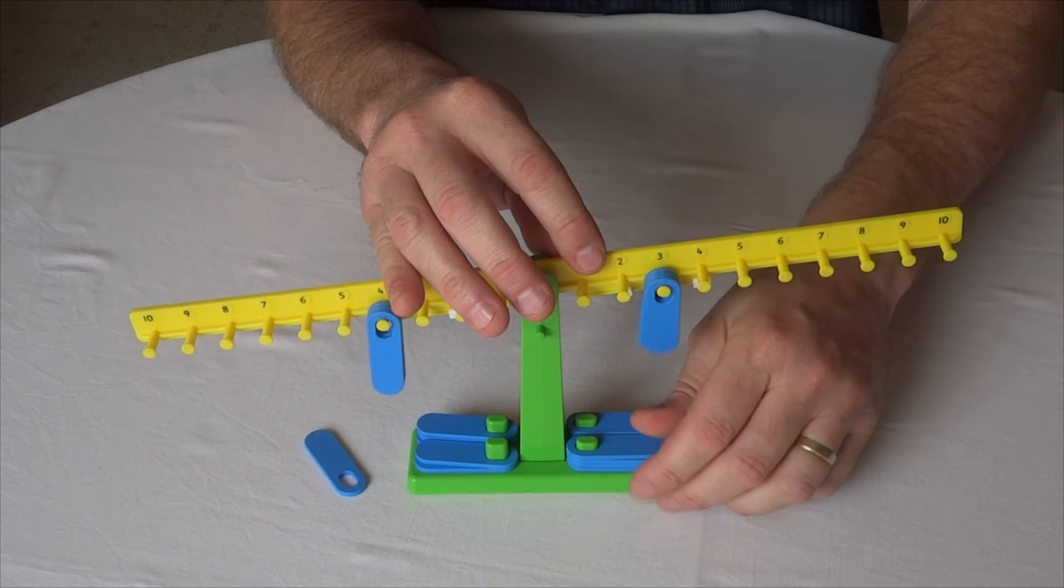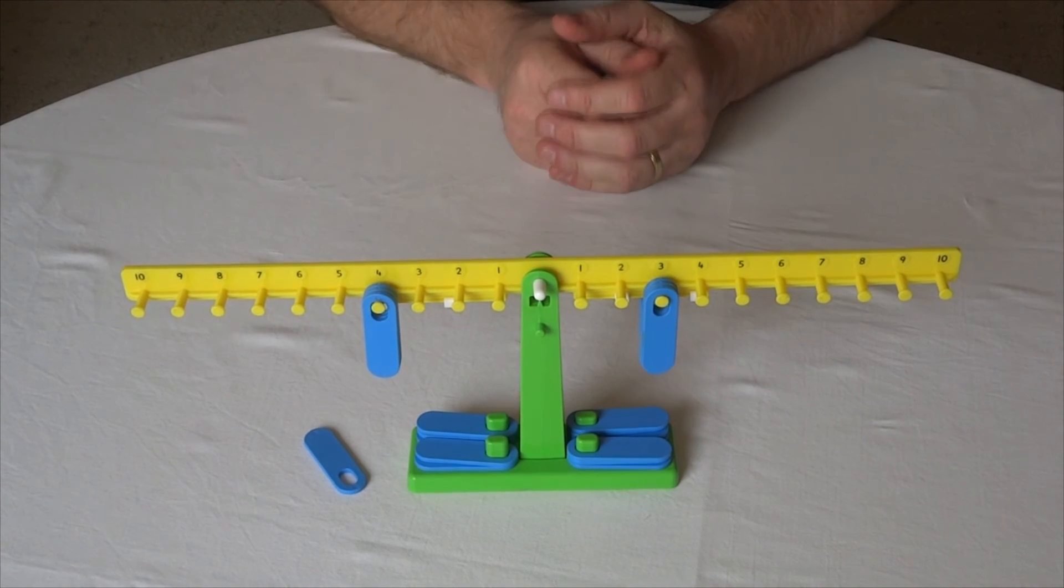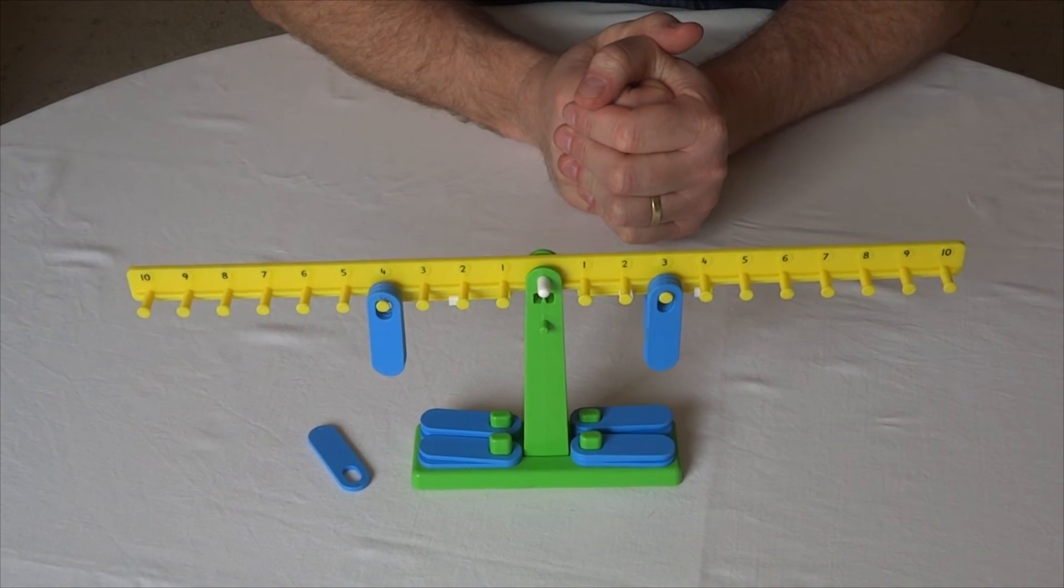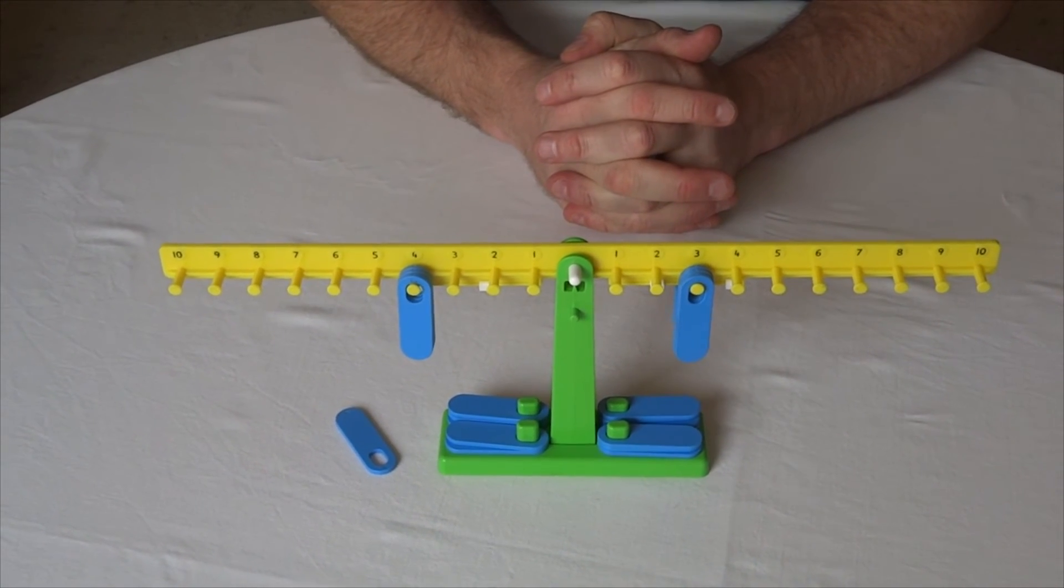Because it's exactly the same on the back, so I could have the fourth weight there. And you start to see that four threes and three fours both give me twelve. Just another little idea that comes out of making use of the number balance.